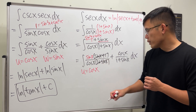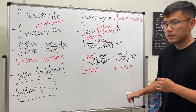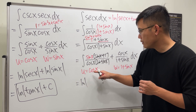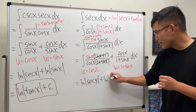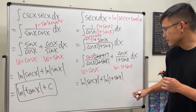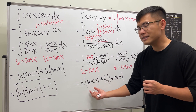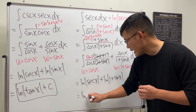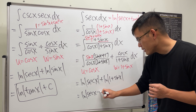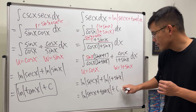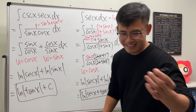Again, do a u-substitution: u equals cosine x, and w equals one plus sine x. For the first part we get ln|sec x|, and then we add ln|one plus sin x|. Adding these two logarithms, we multiply the insides: sec x times one plus sine x gives sec x plus sec x times sine x, which is tangent x. So we get ln|sec x + tan x| plus C — the standard result.